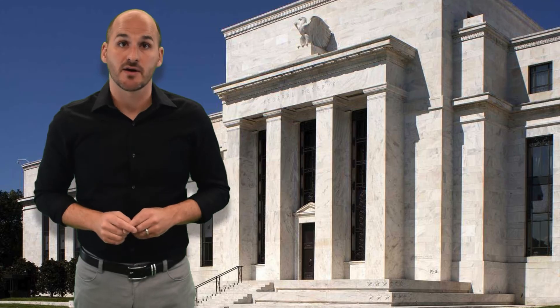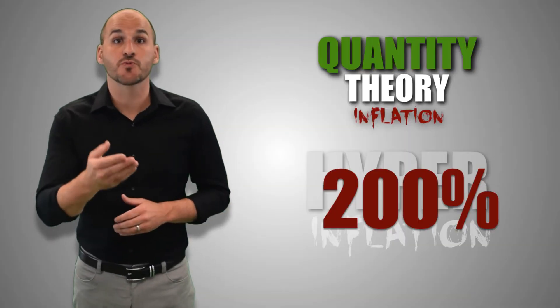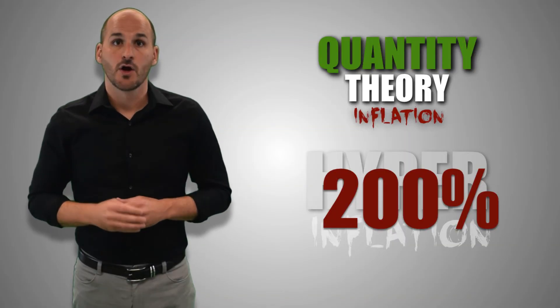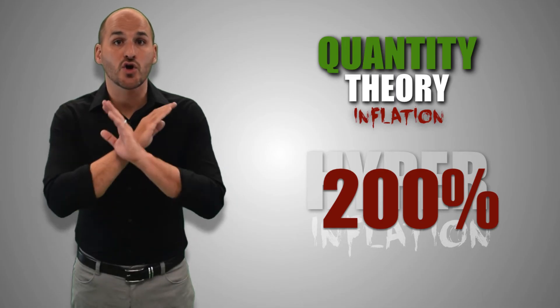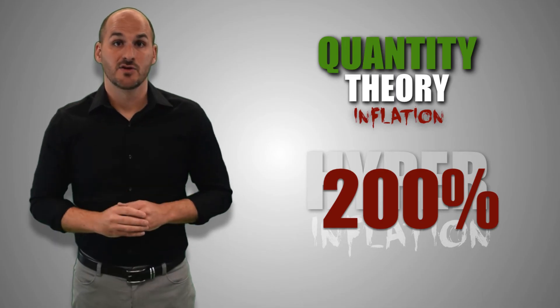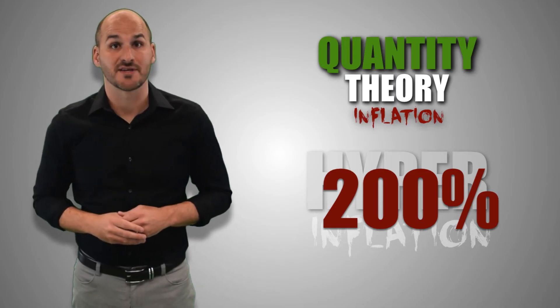Conspiracy theorists claim that the Federal Reserve prints money recklessly to pay off our mounting national debt. But that is a myth we can debunk. Because if that were true, everyday items in the US economy would cost double or triple what they did 5 or 10 years ago, or the US would experience hyperinflation. We're nowhere close to that, so you can officially tell your uncle he's crazy.